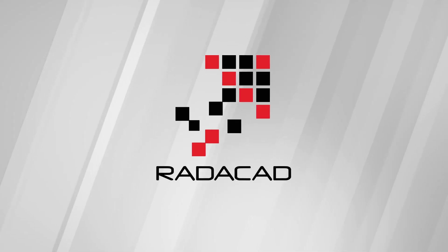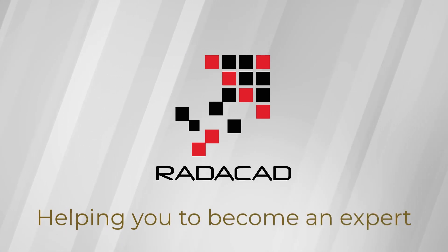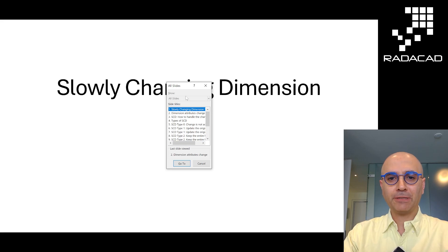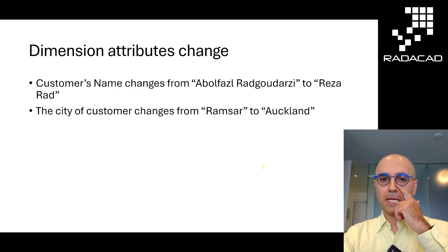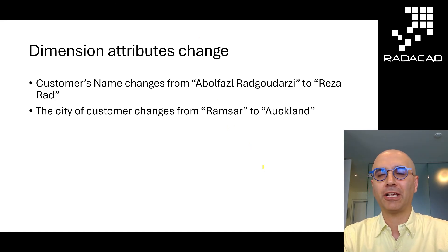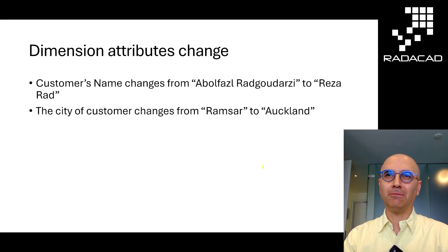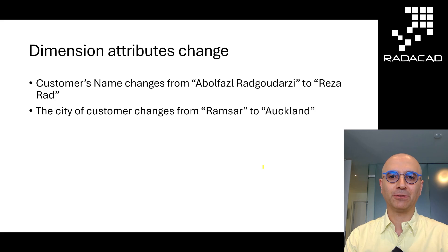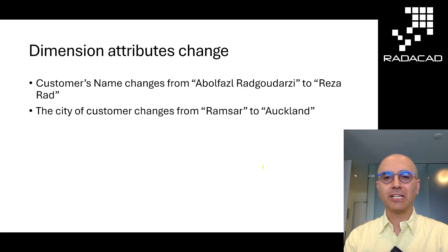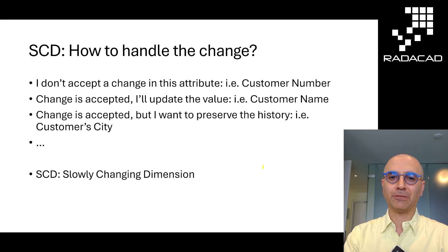So let's go into this video and learn about SCD and what it is and what are the different types of it. A slowly changing dimension or SCD basically comes from the fact that the dimension attributes change over time. When you have a value in a column — which we also call an attribute in a dimension — and that value changes, like for example your customer city was in New York City and now the customer moved to London, or the customer's name changed. Depending on what action you take when that change happens, different types of SCD occur.